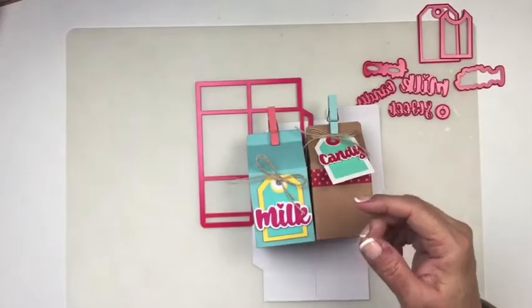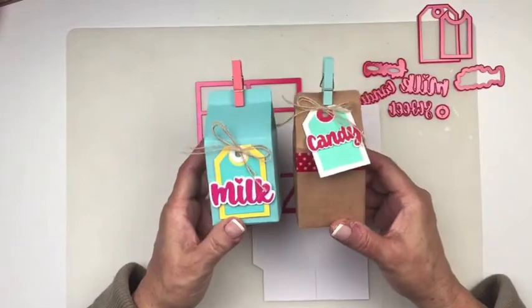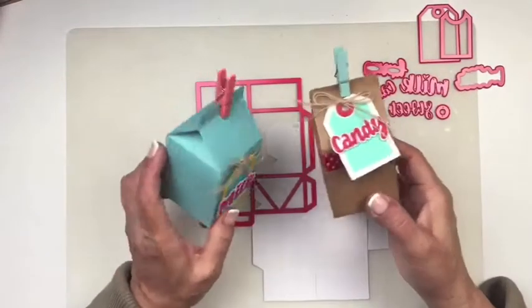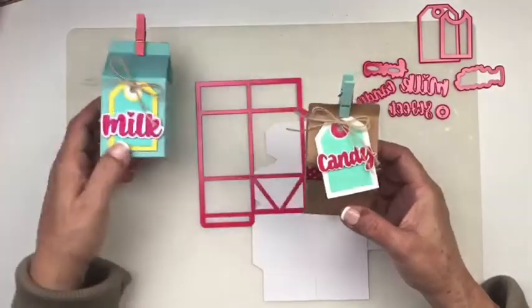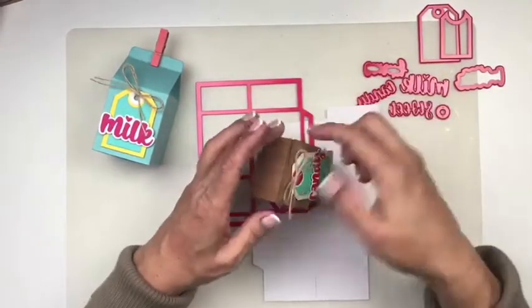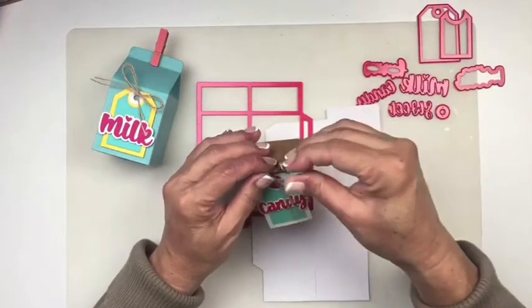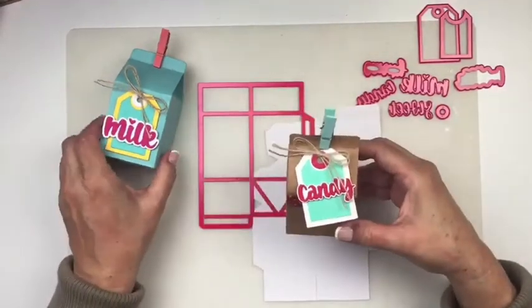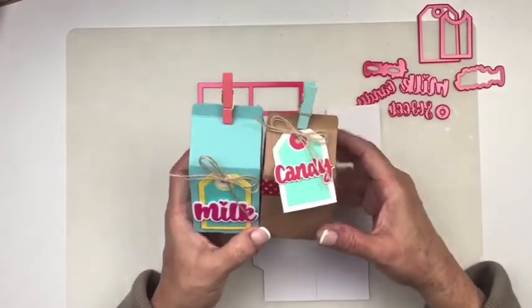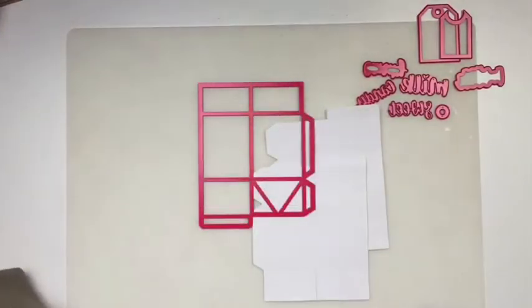Super cute little box and let me show you. So here are two examples of the milk carton box and you can see how cute they are. There's also these little tags and some words and I just have a little clothespin to hold it closed. There's the other one and it comes with the word sweet, candy, or milk so it's great for a little gift giving.